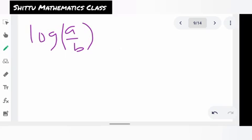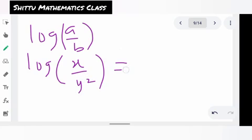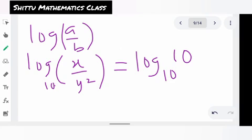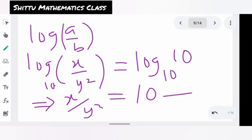We relate this form to equation 2. That equation 2 can now be written in the form log, in brackets, x divided by y squared, close the bracket, equals to log 10 to base 10. From here, this equation can be x divided by y squared equals to 10. Let's call this equation 3.